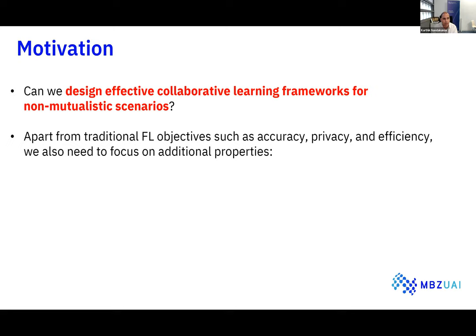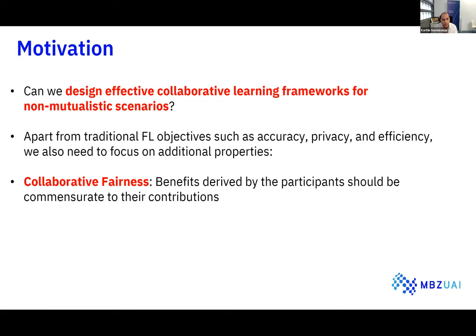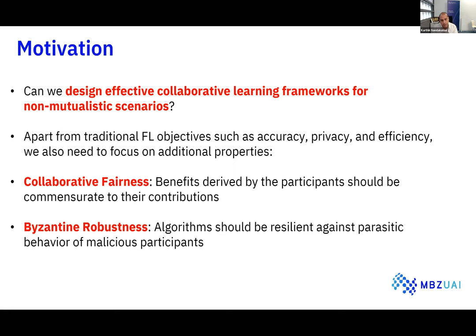To design systems for non-mutualistic scenarios, we need collaborative fairness — the benefits derived by participants should be commensurate to their contributions. We also need Byzantine robustness — if some collaborating entities turn out to be malicious, exhibiting parasitic behavior by getting all benefits without contributing anything or intentionally harming other participants, we need algorithms that are resilient against this kind of behavior.